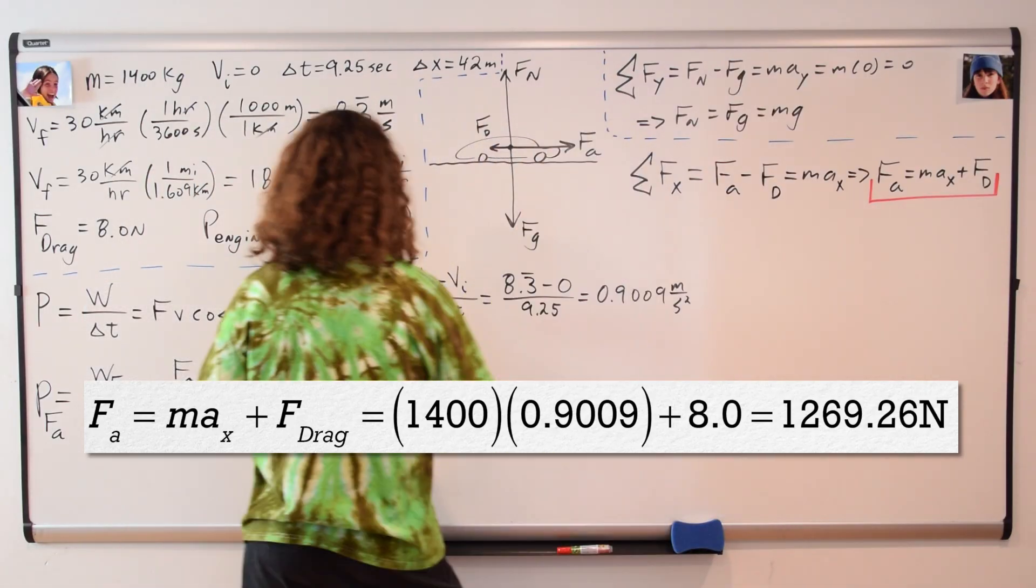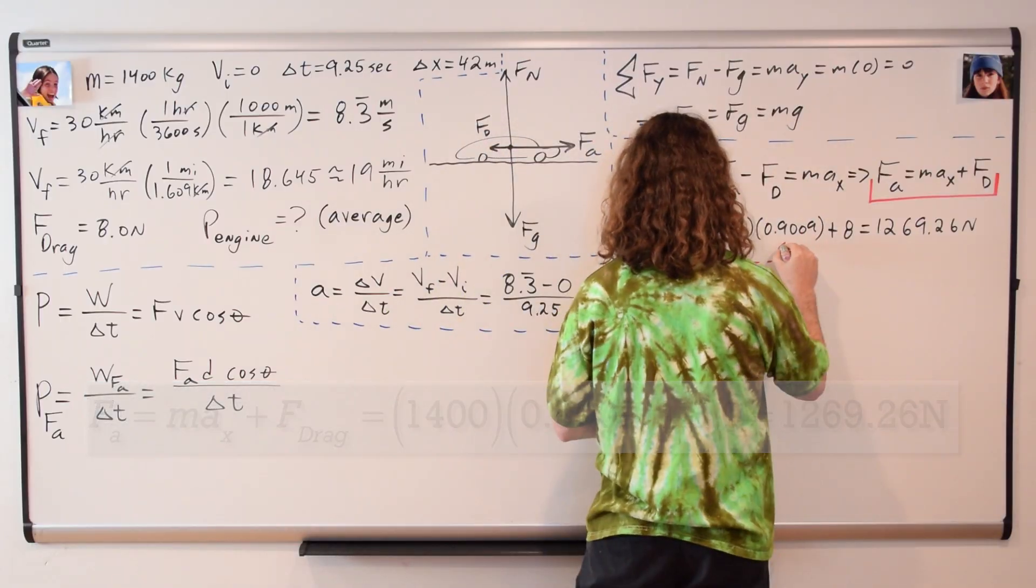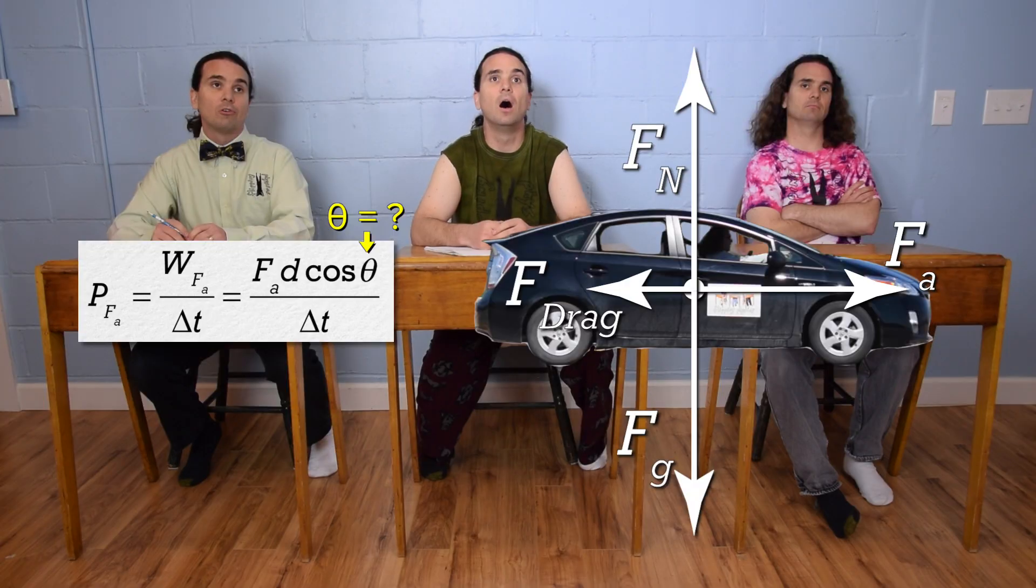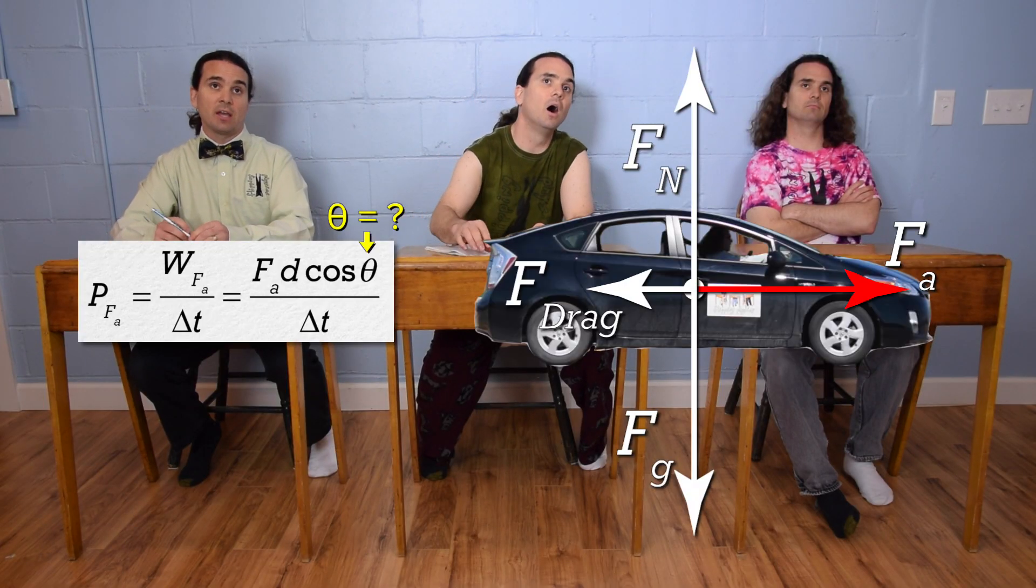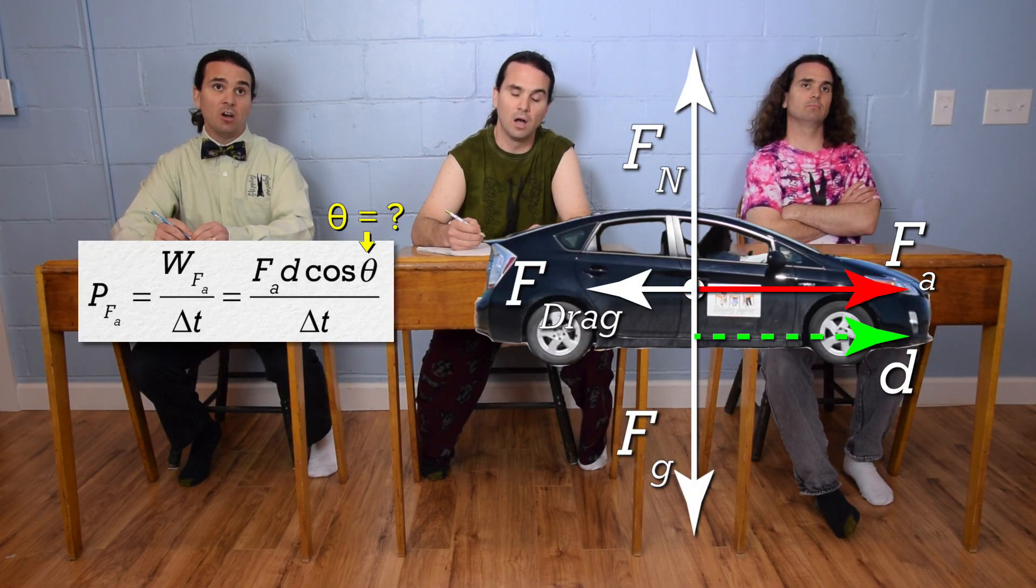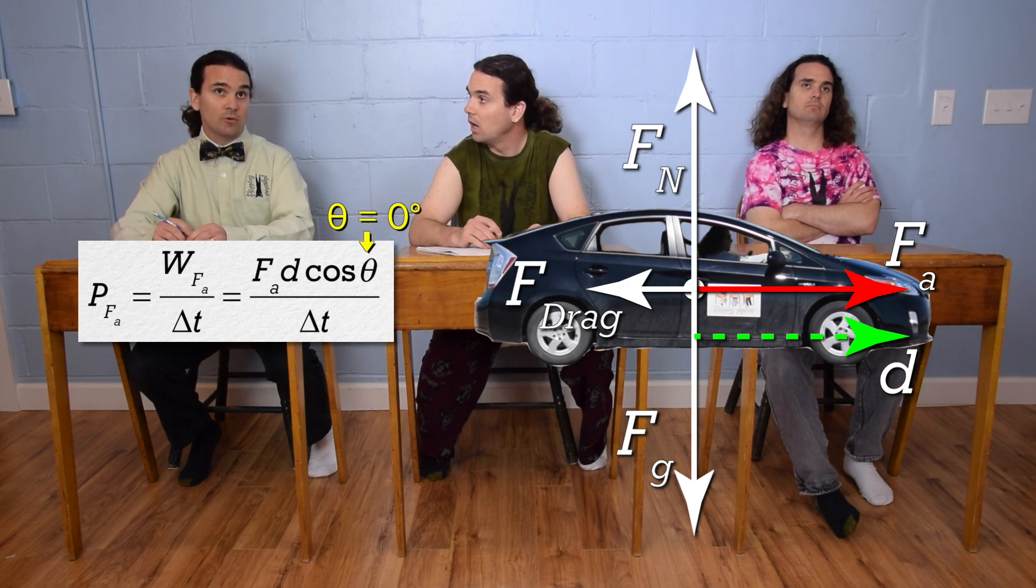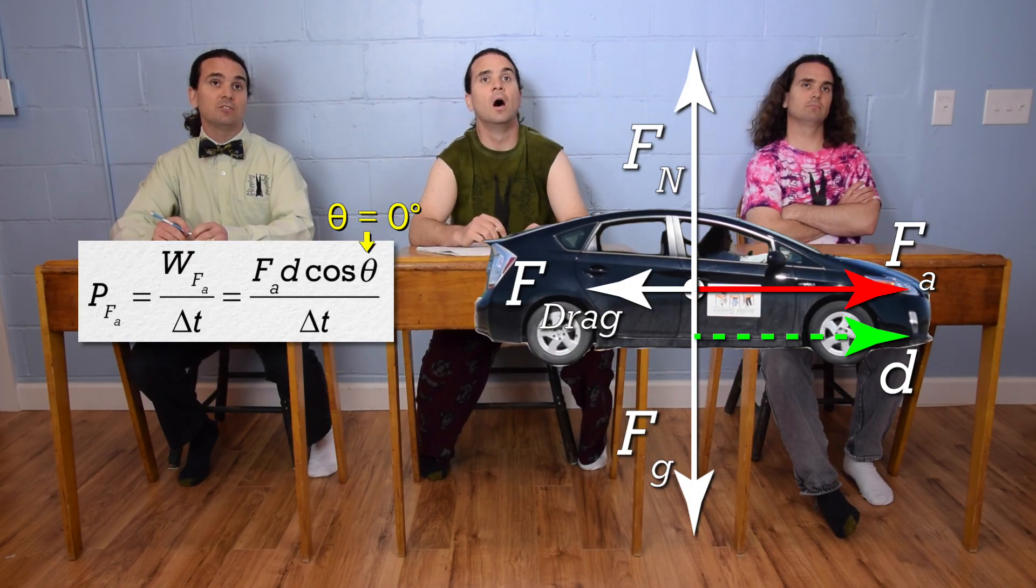Billy, what about theta? What is the angle in this problem? The force applied is to the right, and the displacement of the car is to the right, and the angle between to the right and to the right is zero degrees, so theta is zero degrees.